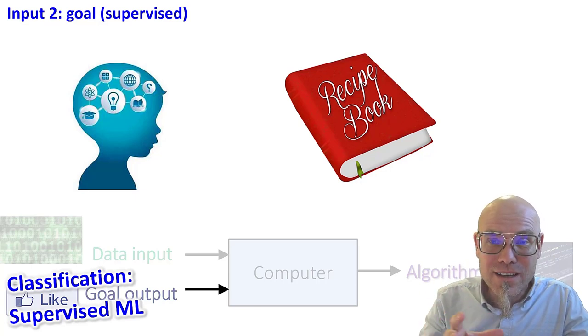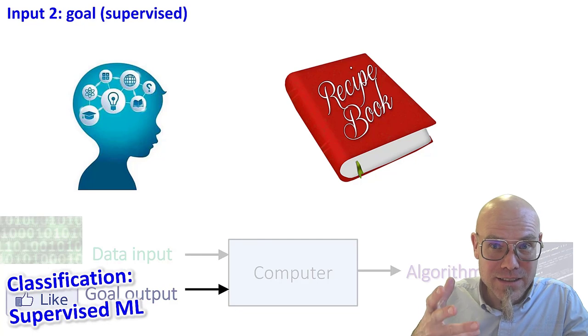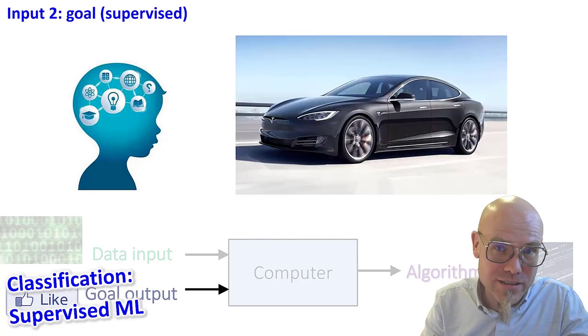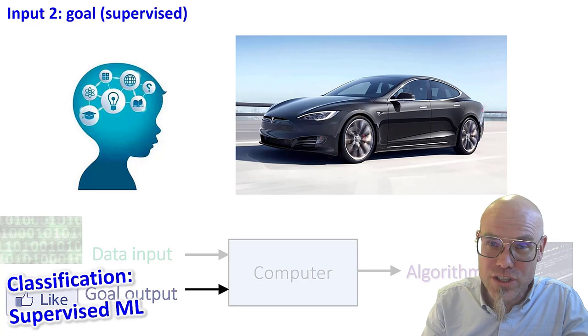What we do, I mean, we teach a child difference between a car and a motorcycle. We just train it by showing the examples. And that's what we do the machine.